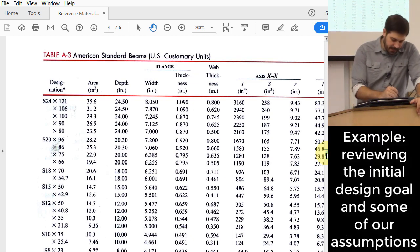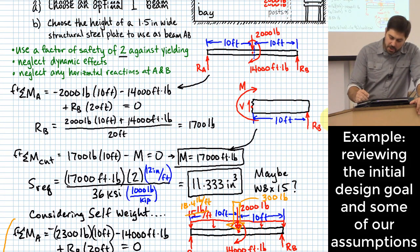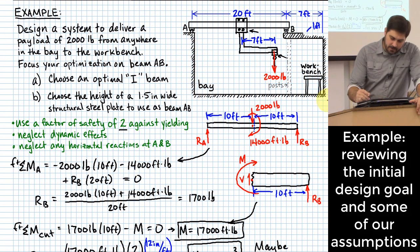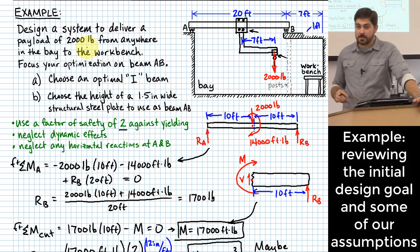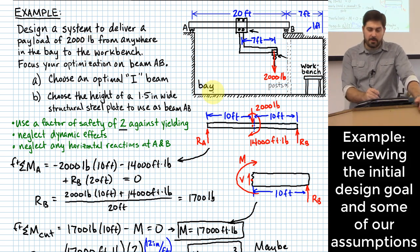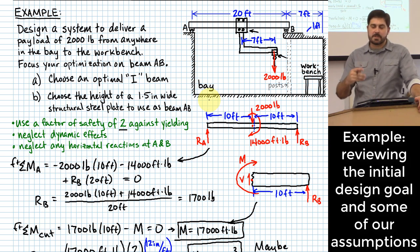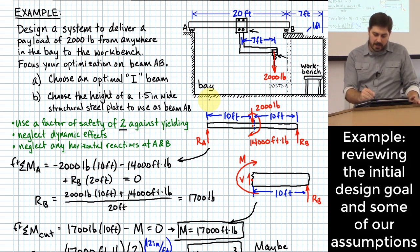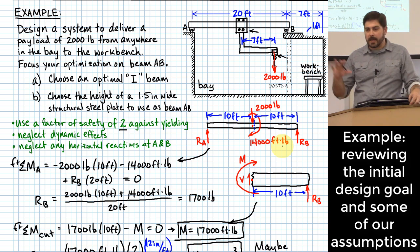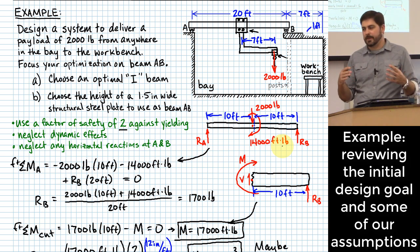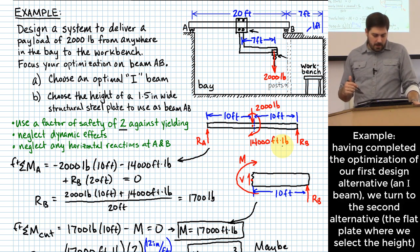To clarify: the 2,000 lb is the payload the crane needs to suspend. The weight of the arm assembly itself was neglected for simplicity — including it would slightly increase the downward force and the concentrated moment, but wouldn't significantly change the solution procedure. Part A is complete.